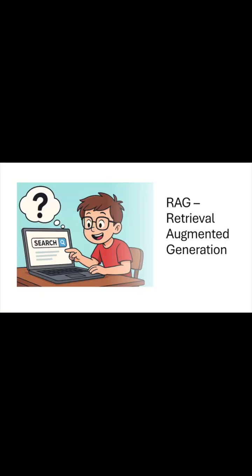The secret sauce is RAG — Retrieval Augmented Generation. Think of it as a very smart guy. You ask a question to that smart guy; it may not know the answer, so rather than hallucinating or guessing the answer, it goes to the internet, finds out the latest relevant information, searches, and gets you a very good answer to your question.